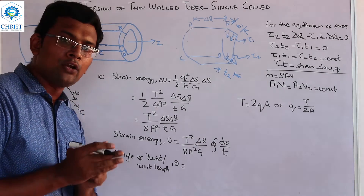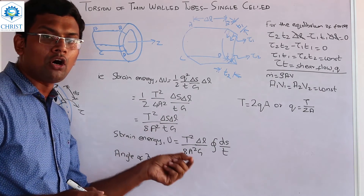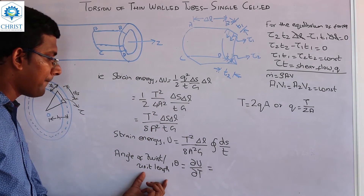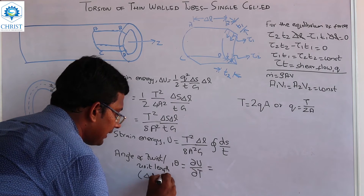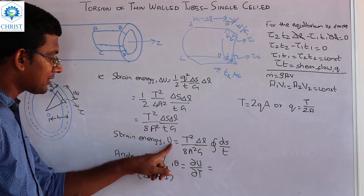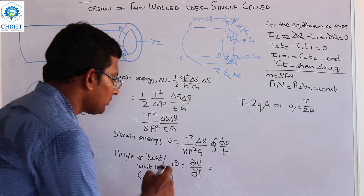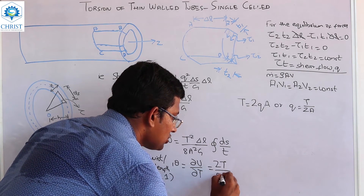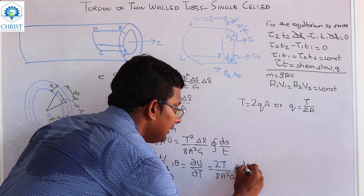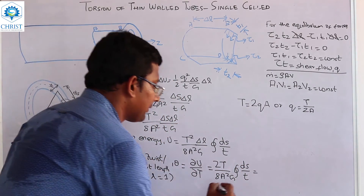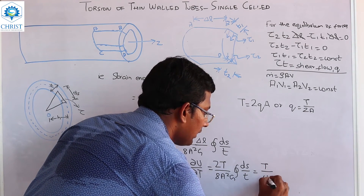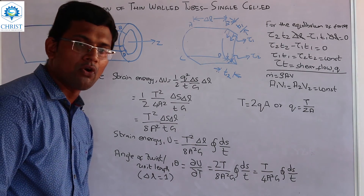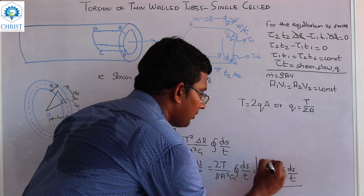By the first theorem of Castigliano, the angle of twist equals dU by dT. This is the angle of twist per unit length. Since tau into T equals 2QA, Q equals T divided by 2A. Differentiating, 2T divided by 8A squared G into the surface integral of ds by T, this simplifies to T divided by 4A squared G into the surface integral of ds by T. This is the expression for angle of twist per unit length theta.